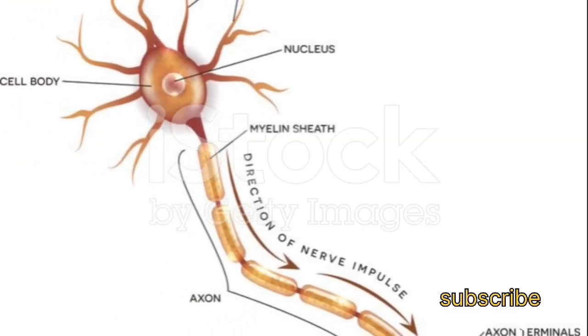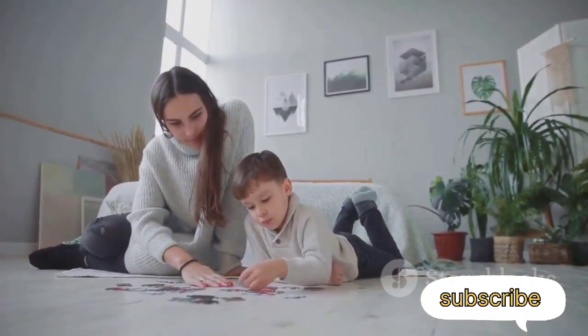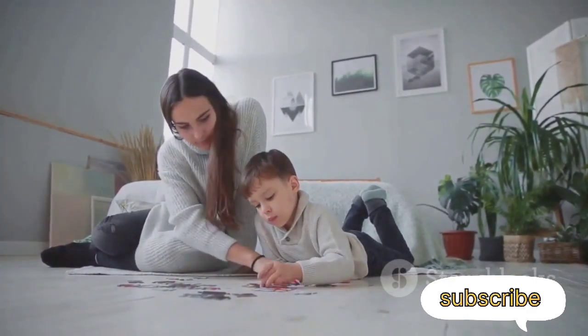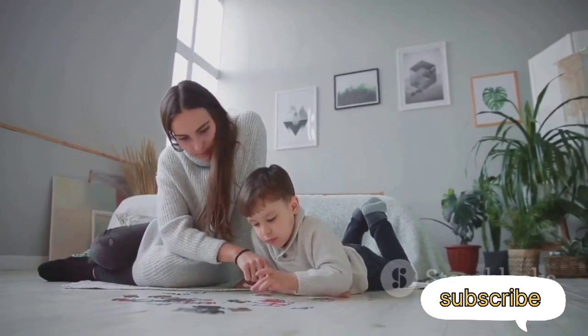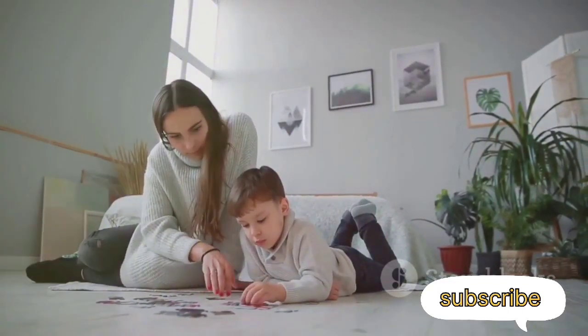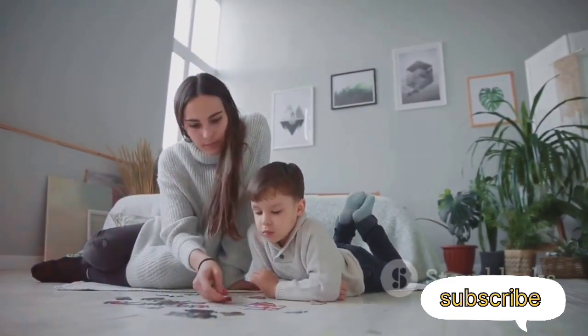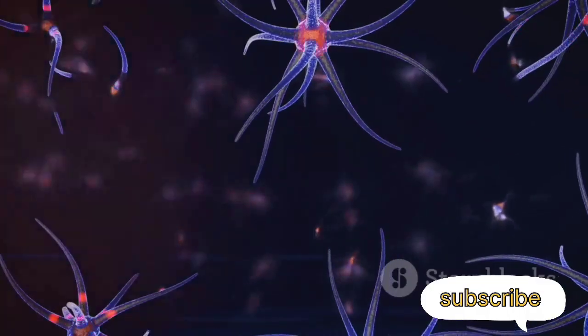Branching out from the cell body, we have branches, or dendrites. These are short, tree-like extensions that receive messages from other neurons and carry them towards the cell body. Think of dendrites like the roots of our tree, pulling in nutrients from the soil.